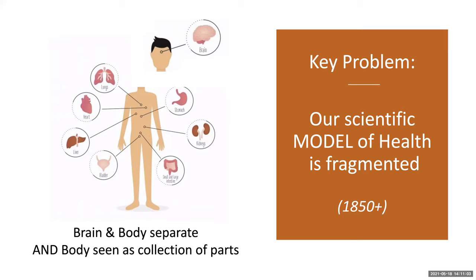Using reductionism, the brain is seen as separate from the rest of the body, and the body itself is seen as a collection of different organ system parts. In some ways, reductionism has been very successful because it has allowed doctors and patients to focus on parts of their body and disease. However, reductionism prevents us from seeing factors that influence the whole brain and body, and prevents us from understanding pathogenesis — how diseases occur and why people might have more than one disease at the same time.